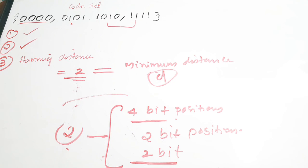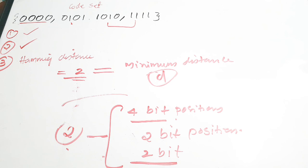Hence we can say that the given code set is actually a linear code. You have to check the first condition C1 plus C2 equals C3, verify the all-zero element is present, and check that the Hamming distance equals the minimum bit position difference between any two code words. If all three are satisfied, the given set is a linear code word set. In this video we discussed what is a linear code word, the criteria for a code to be linear, the basics of block codes, and the generator matrix structure. I really hope you found the video useful — please give it a thumbs up, share it, and subscribe to the channel.